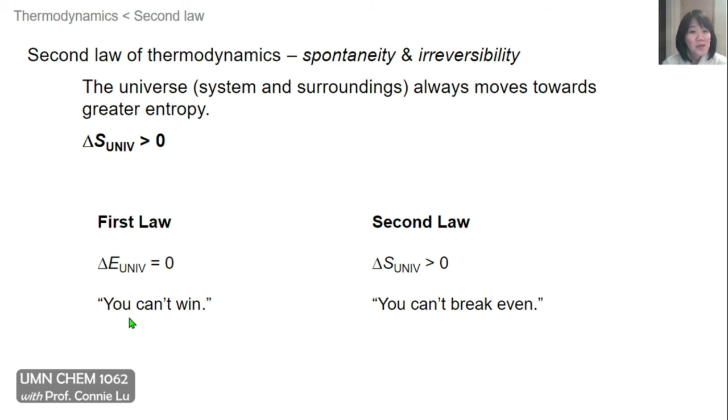So for the first law, it states you can't win. You can't get more than what you start with. The second law, on the other hand, says you can't break even. So not only can you not get more than what you start with, but some of what you started with will be lost irreversibly. And you can't get it back. And so you won't even end up even because of the second law and the fact that the universe will always go towards greater entropy.